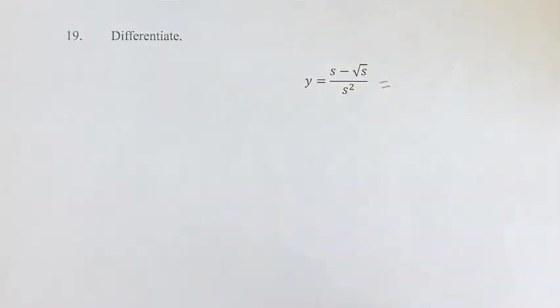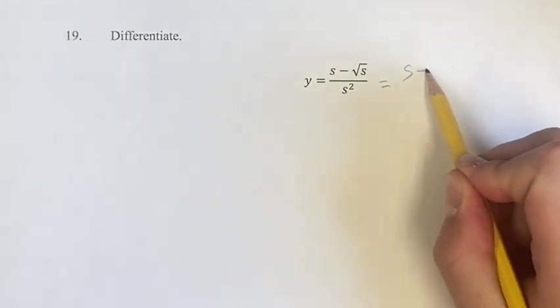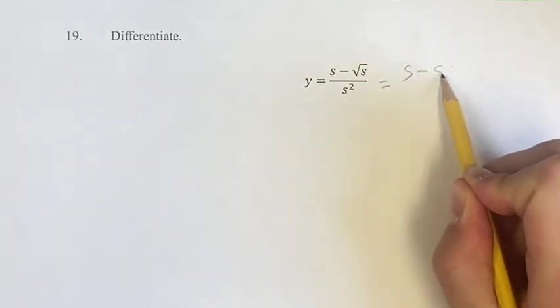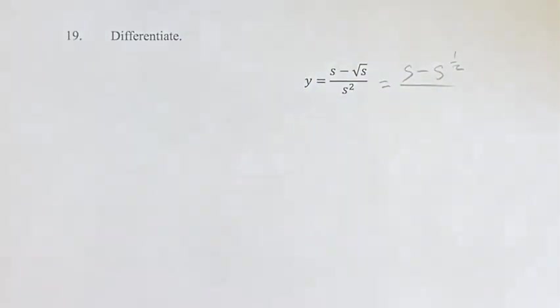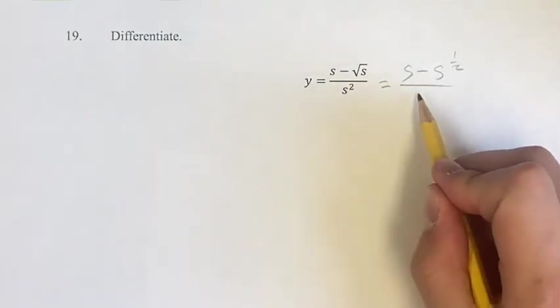One thing we're going to do before we find the derivative is change the square root of s into s to the 1 half. Turning it into its power function form is going to make it a little bit easier to derive.